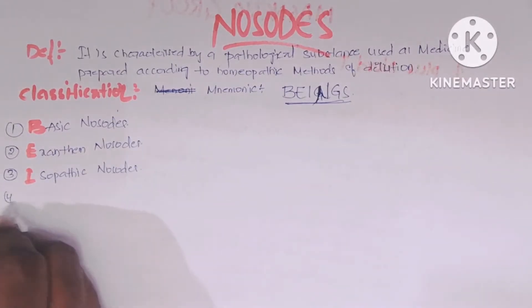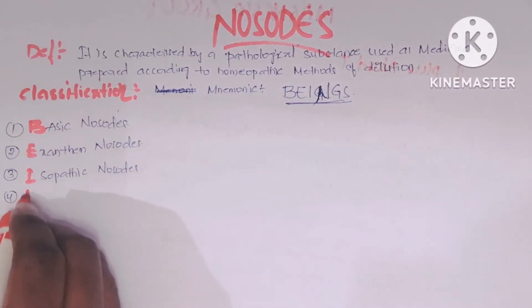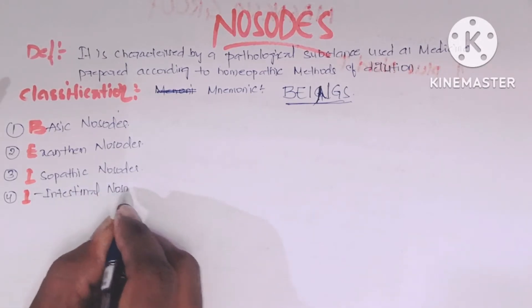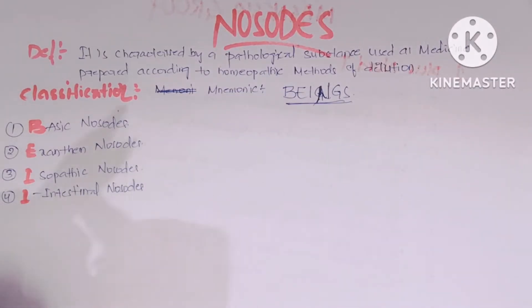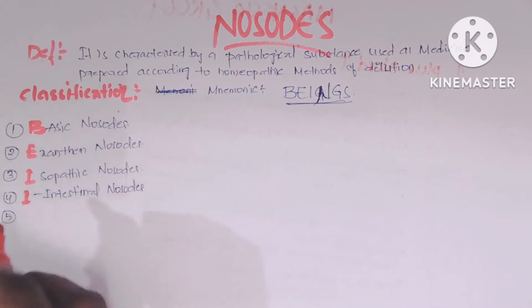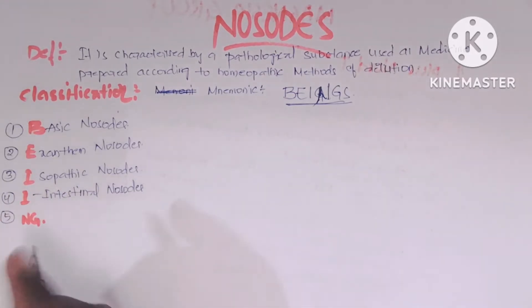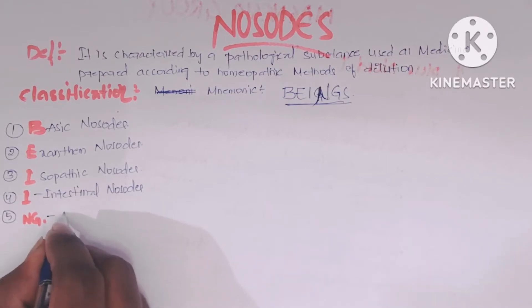The fourth one is Intestinal nosodes. And the last one, the fifth nosodes, just remember G and N, which means Genus Autogenous nosodes. These are only helpful for the Exanthema's purpose.